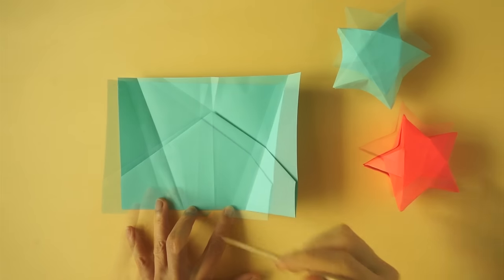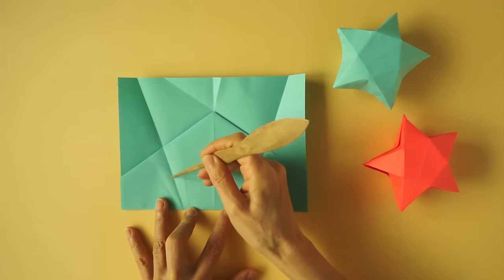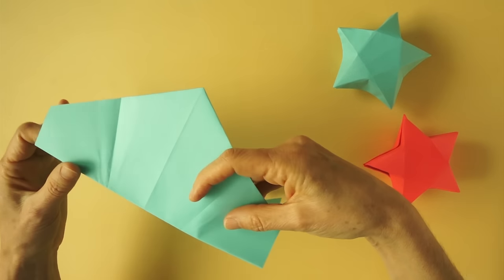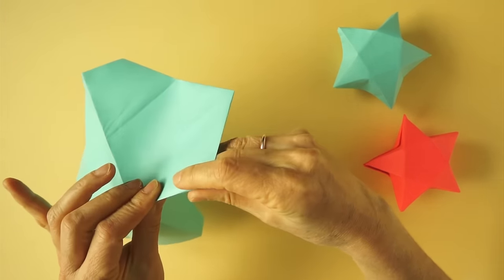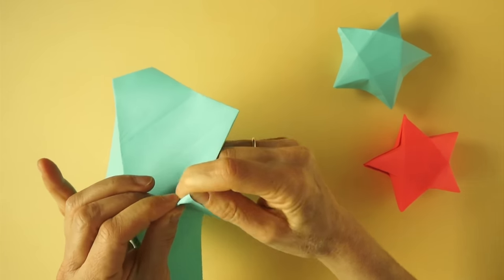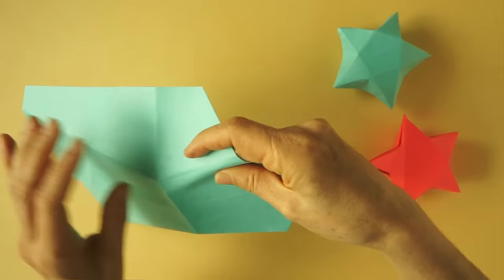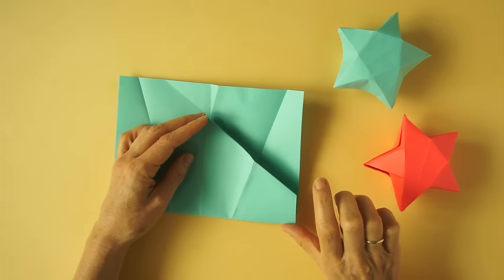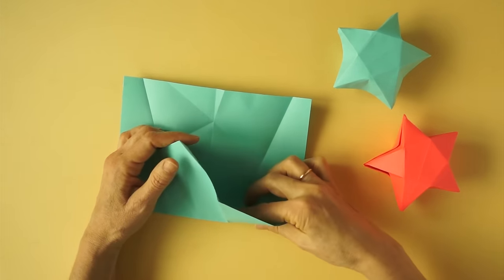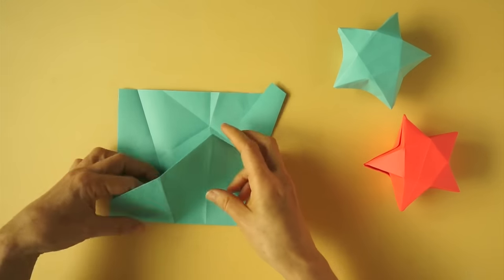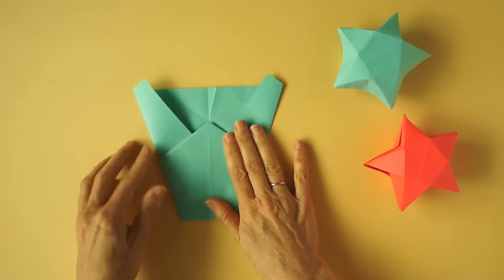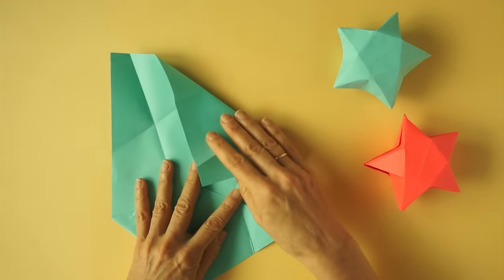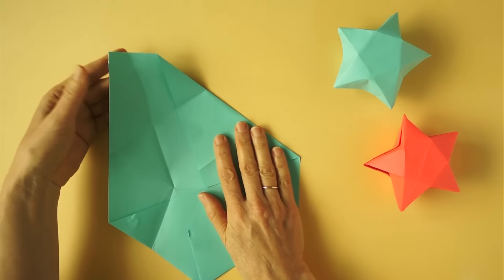Unfold. These sections are valley folds at the moment. We are going to turn them into mountain folds. We are going to press from this edge and inside reverse this area. We are going to unfold again. We are going to bring this down, and we are going to bring this down.